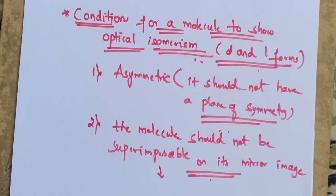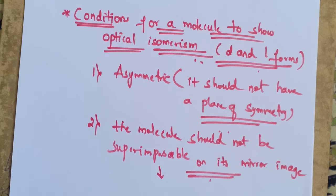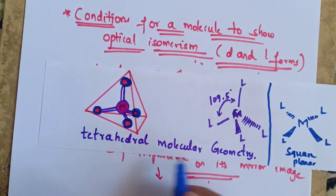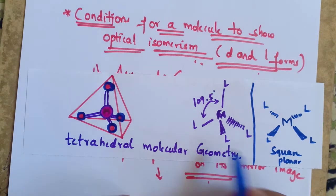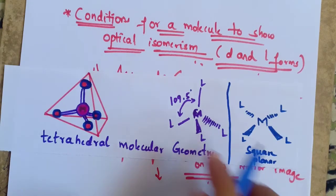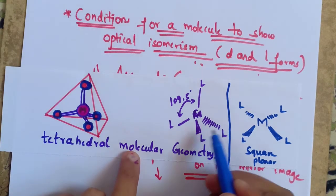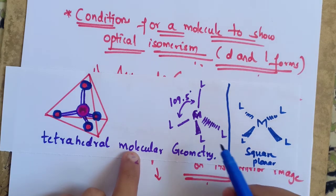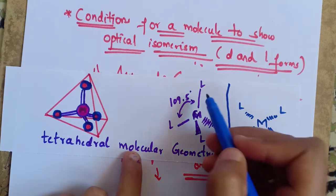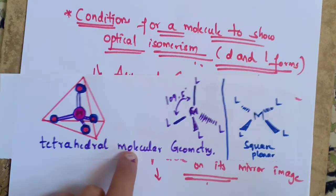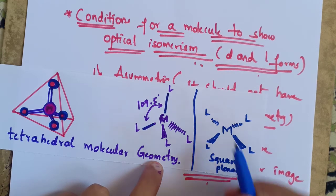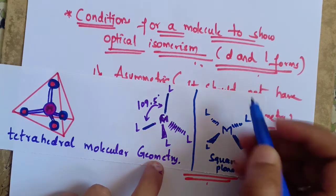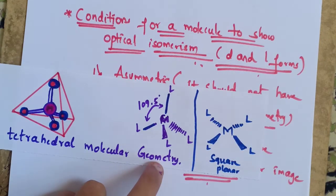Now we can start our explanation about optical isomerism in four-coordinated complexes. Four-coordinate complexes have two types of geometries: tetrahedral and square planar. In the tetrahedral geometry, one ligand is present on the back side, one is on the front side (wedged line), the dashed shape shows it is away from the observer, and the line shows it is on the plane of the paper. In the square planar structure, two ligands are towards the front and two are away from the observer.